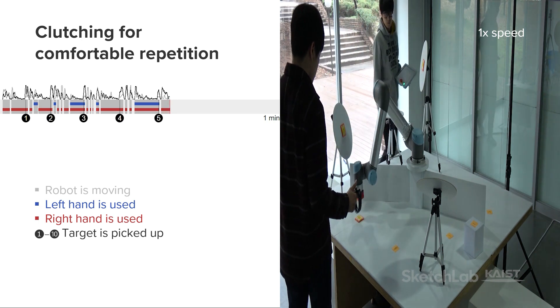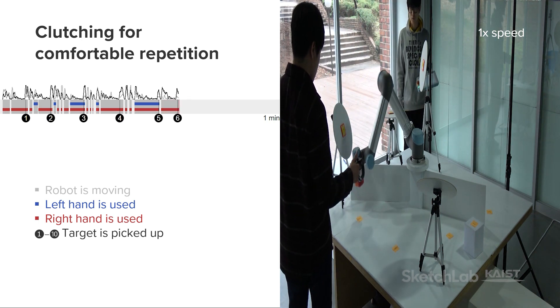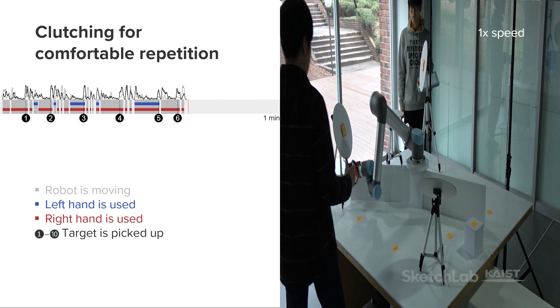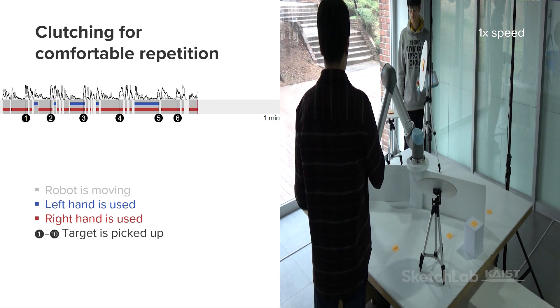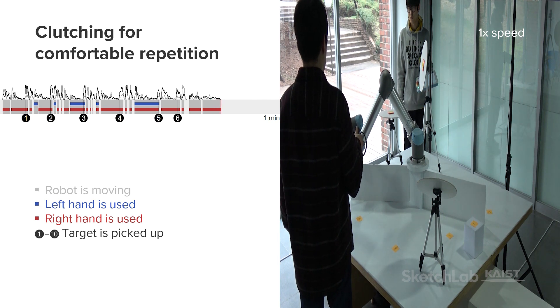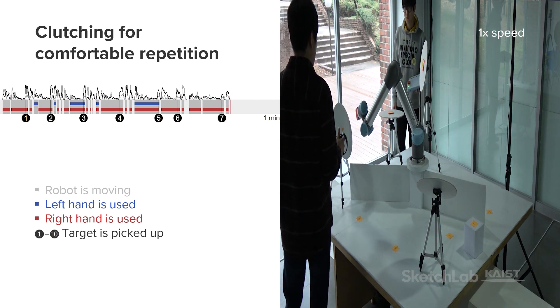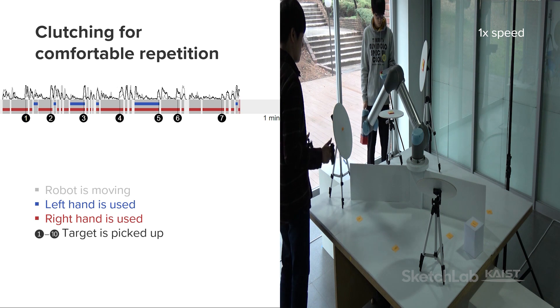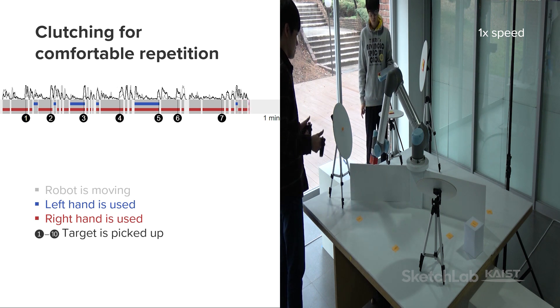Finally, all participants repeated hand motions to make larger movements within the comfortable ranges of motion of their hands, wrists, and arms, shown as many colored bar segments. One participant even alternatingly clutched between the left and right hands, shown as non-overlapping consecutive segments of red and blue bars.